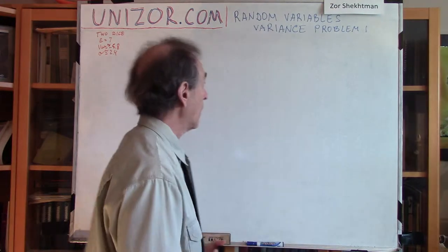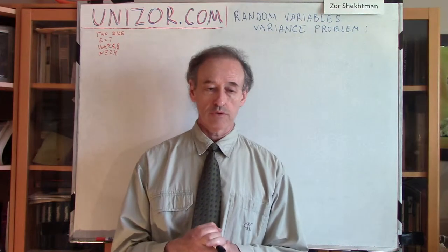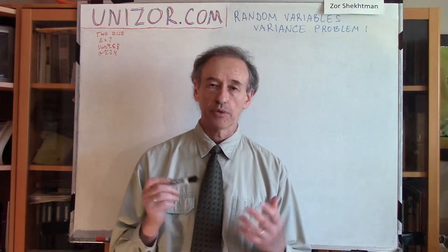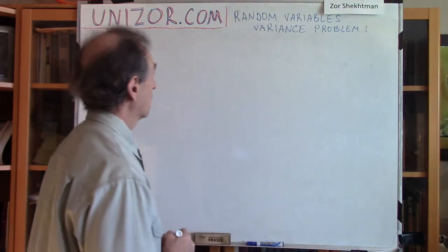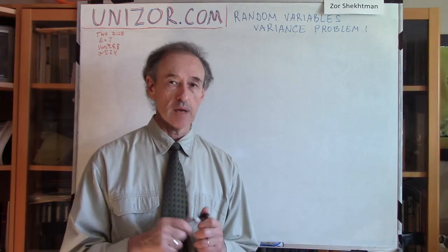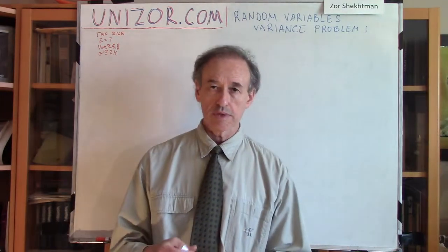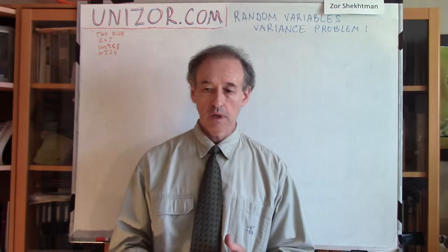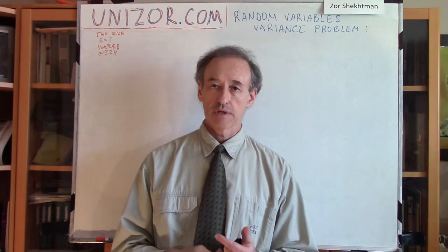Our task for today is the following problem. The random variable we are talking about is a sum of two numbers which we get when rolling two dice. So we have two regular perfect dice, and the sum of the two numbers rolled is a random variable because depending on circumstances this sum takes different values. What I'm interested in is the expectation, variance, and standard deviation of this random variable.